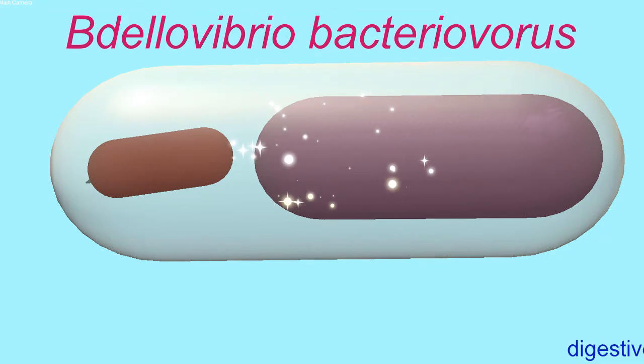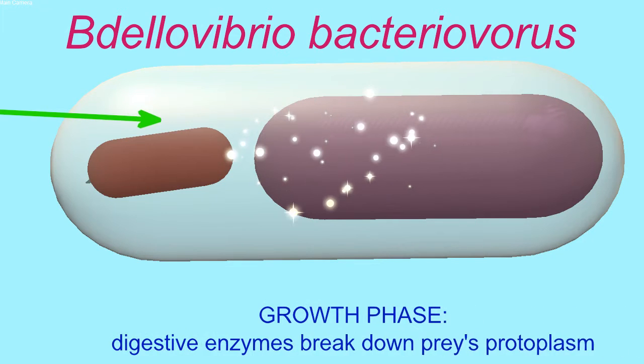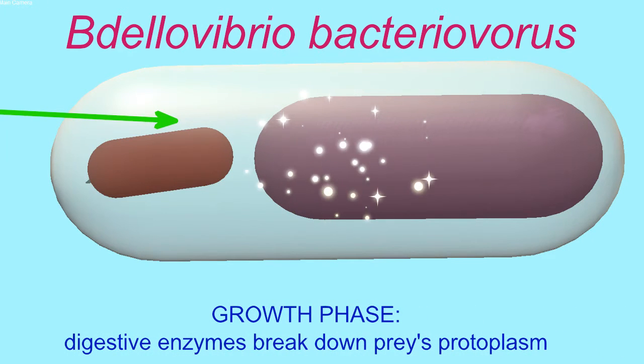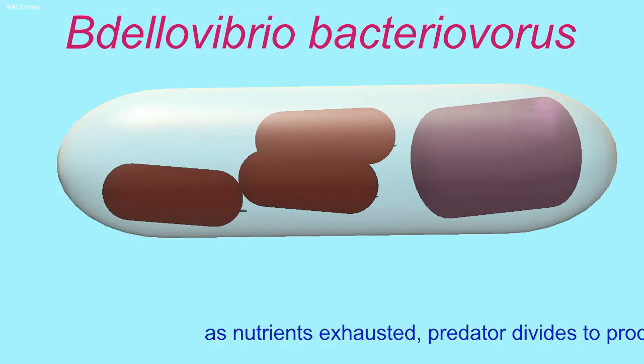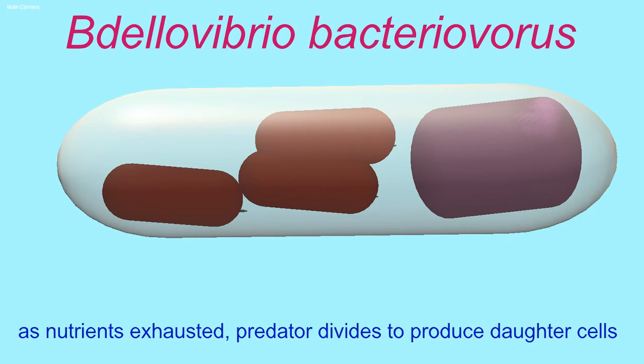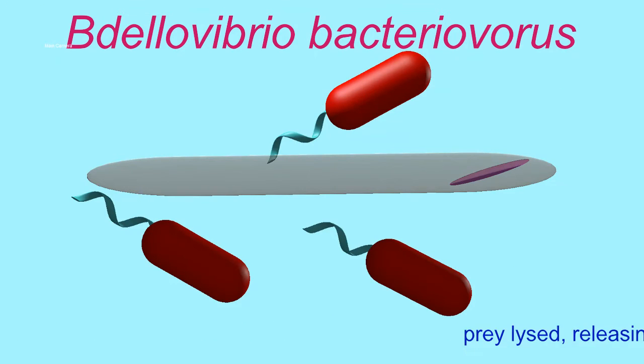Here, it secretes a number of digestive enzymes, which slowly break down the biomolecules of the bacterium it has invaded. As the protoplasm gets smaller, the Bdellovibrio can then reproduce itself, producing daughter cells.